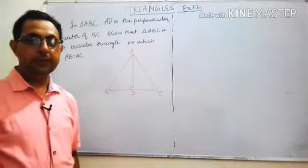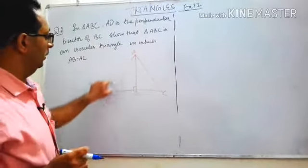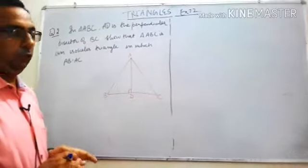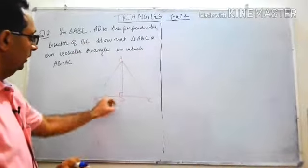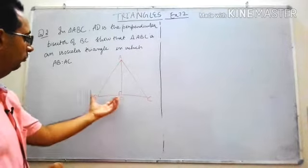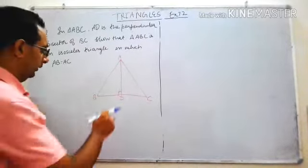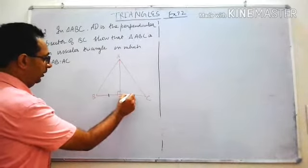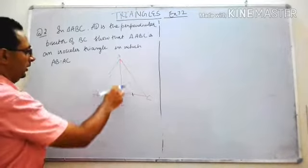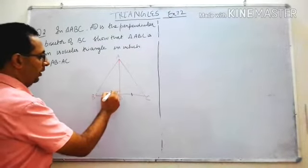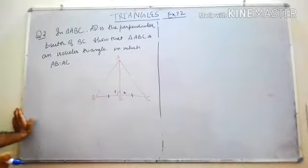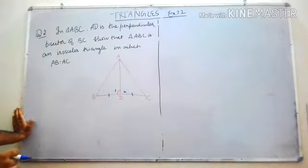Next question: in triangle ABC, AD is the perpendicular bisector of BC. AD is the perpendicular bisector of BC, meaning AD divides BC into two equal parts. BD and DC are equal, and because AD is perpendicular, angles 1 and 2 are both 90 degrees.